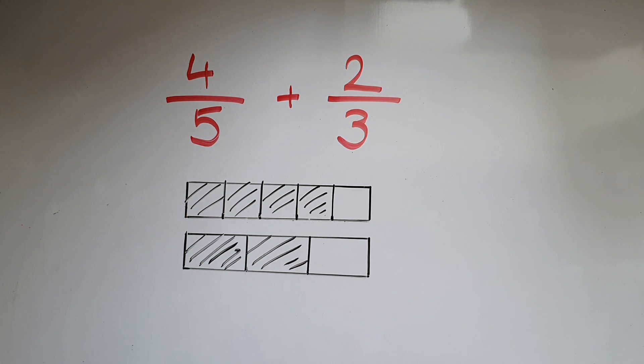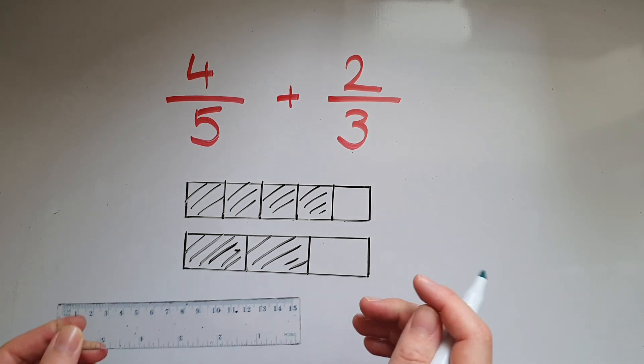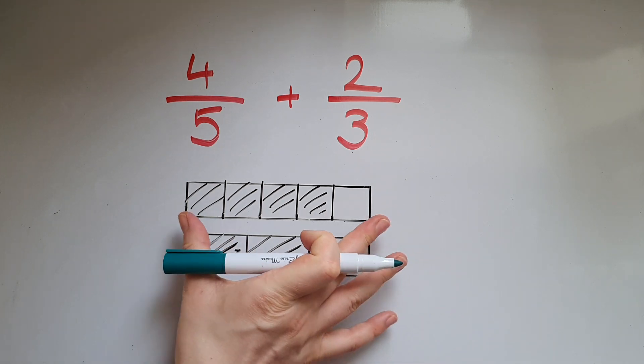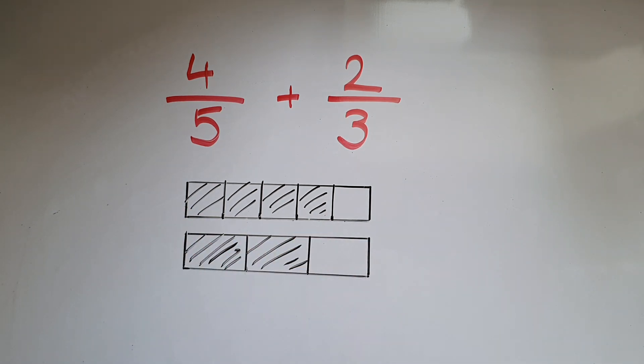So what we're going to do, we're going to split these chocolate bars into equal parts. So equal size of slices. So we are going to split this whole chocolate bar into 15.